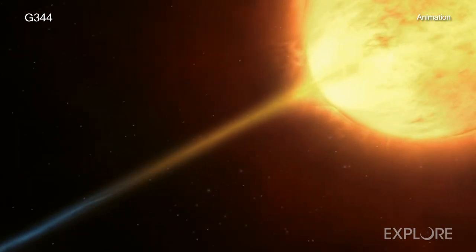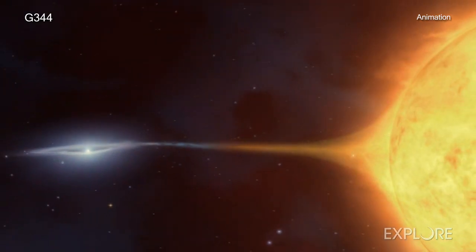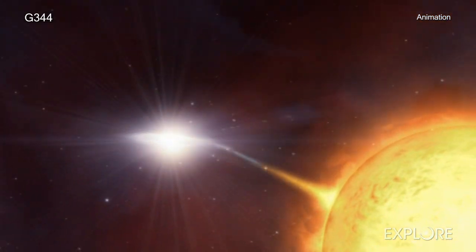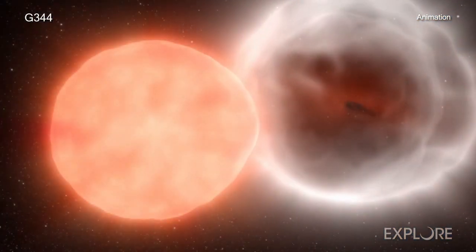If the companion's orbit brings it too close, the white dwarf can pull material from it until the white dwarf grows so much that it becomes unstable and explodes. This kind of stellar blast is called a Type Ia supernova.